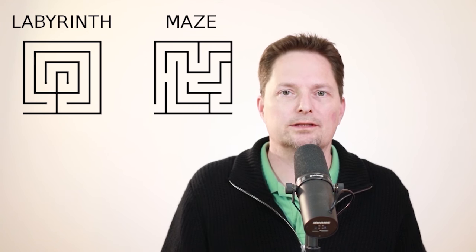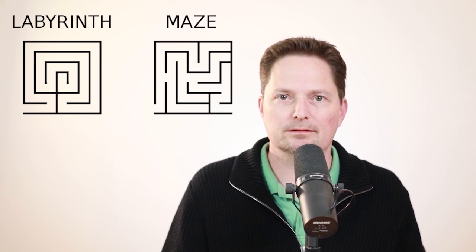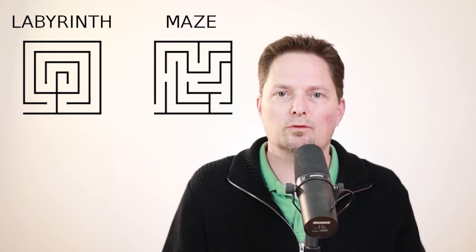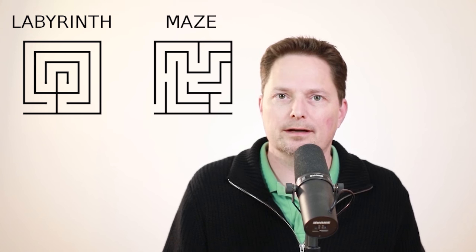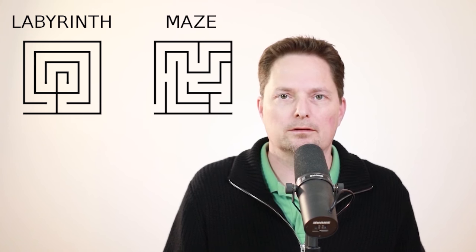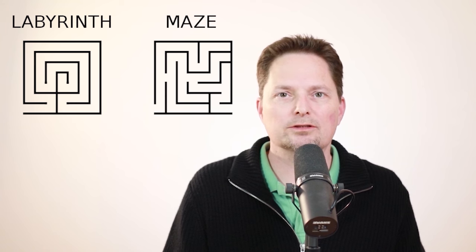So we see they look similar, but there's a difference. There are some technical differences. We see with the labyrinth, there's one way in and one way out, and the goal is to get to the center. And there are no dead ends. Now we look at the maze. We see there's an entrance and there's an exit. The goal is to get through the maze, and there are dead ends. But these are technical differences.